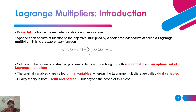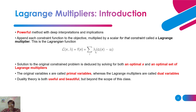What is a Lagrangian Multiplier? It's a powerful method with deep interpretations and implications. We can append each constraint function to the objective function — this is our objective function multiplied by a scalar. This scalar value for that constraint is called a Lagrangian Multiplier. The overall Lagrangian function is given by L of x comma lambda, where lambda is the Lagrangian Multiplier.